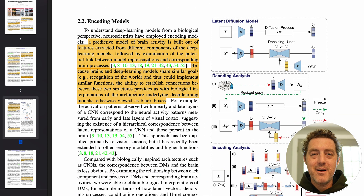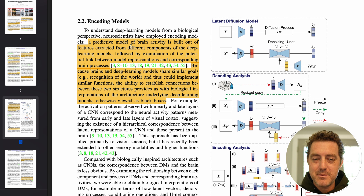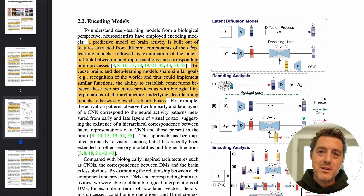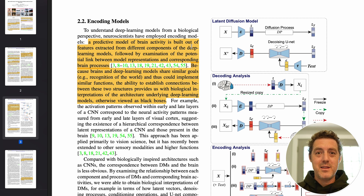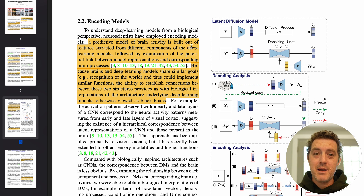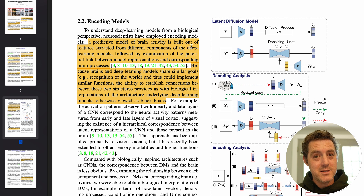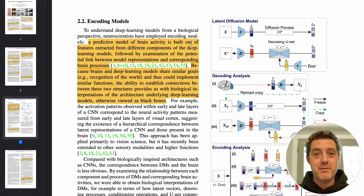Here's something absolutely stunning: a predictive model of brain activity is built out of features extracted from different components of the deep learning models. The way that the human brain interprets images is very similar to the way that artificial networks interpret images. They were actually able to map different layers from how the brain interprets images to how Stable Diffusion interprets images, and that's how they achieved the high quality results.